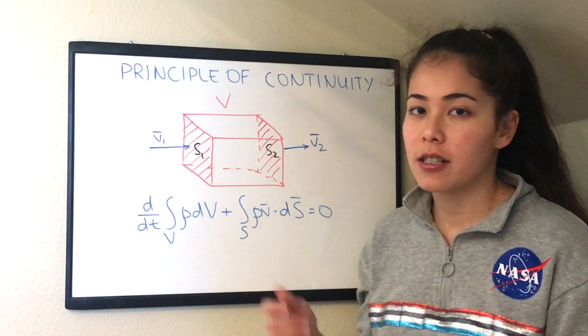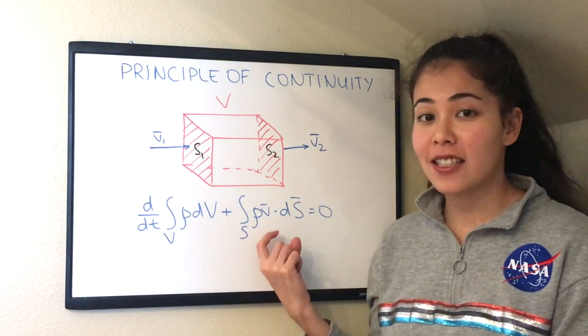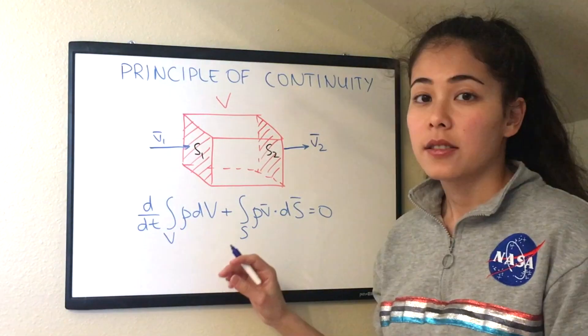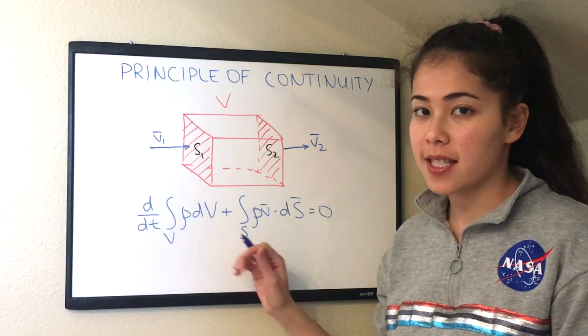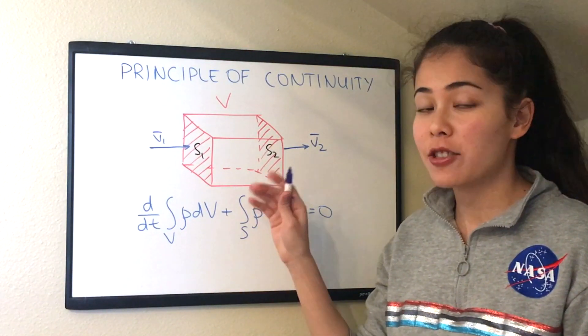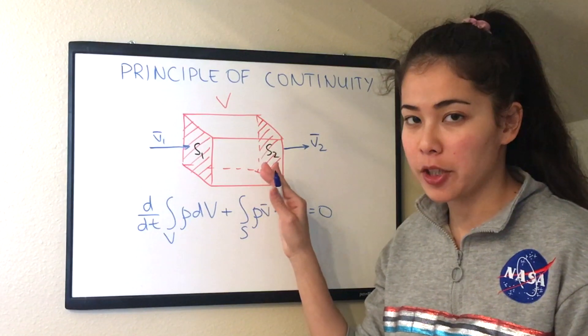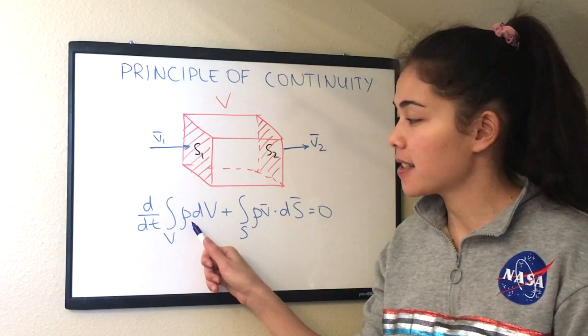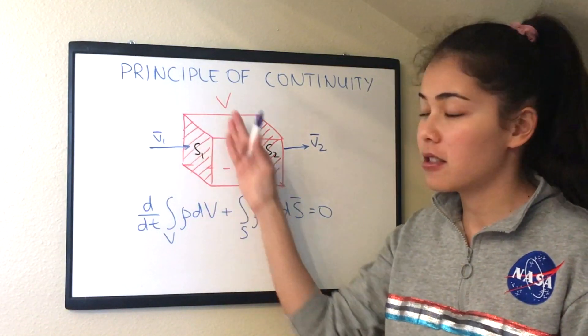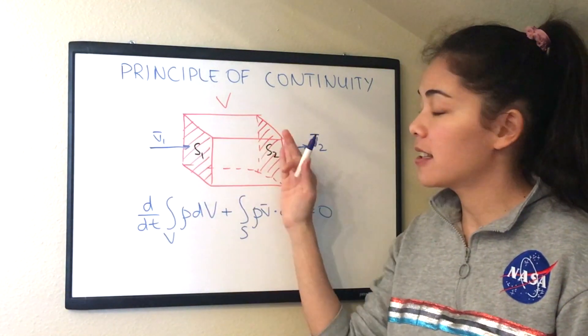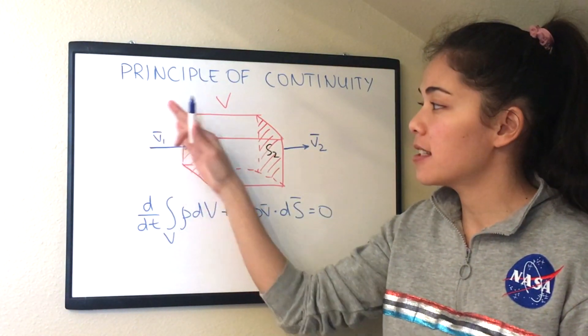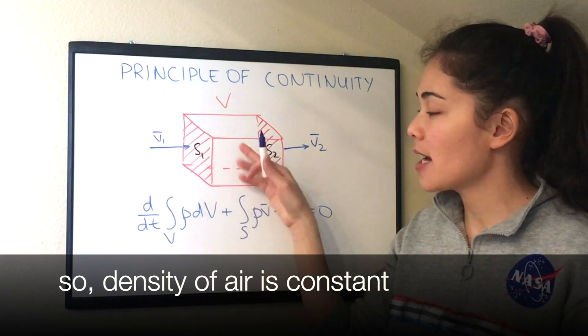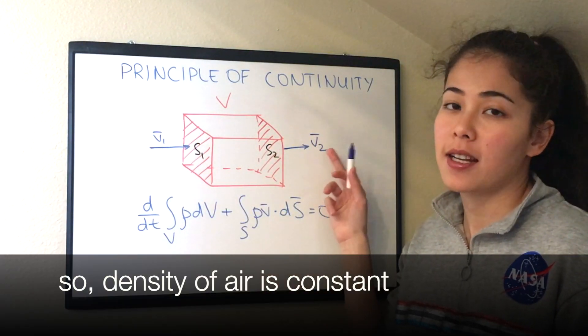So now let's actually integrate these expressions. And here we have a lot of assumptions because we are trying to make this problem simpler. We assume that the density of air is the same across the surface and inside the control volume. So the density of air will be the same in this area inside the volume and when it exits.